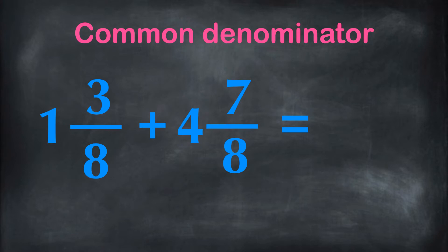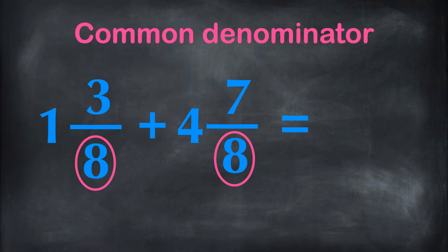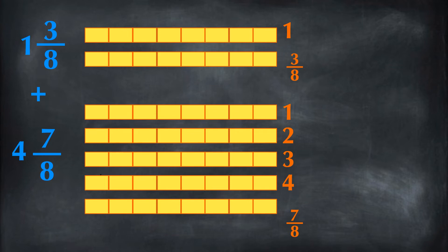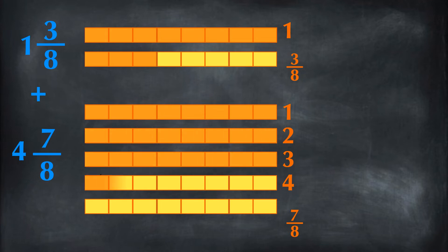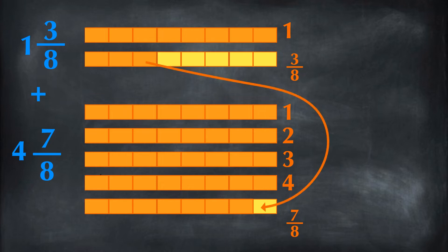So let's go back to the question again. Here 1 and 3 eighths is being added with 4 and 7 eighths, and these mixed numbers have the common denominator 8, so the denominator does not change. Here is a visualization. 1 and 3 eighths can be visualized as 1 whole thing and fraction 3 eighths. 1 eighth from 3 eighths can be added to 7 eighths to make 1 whole thing.